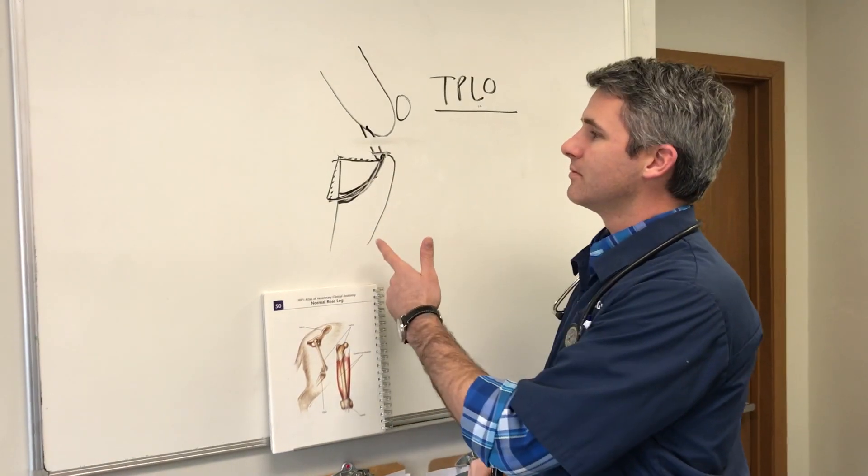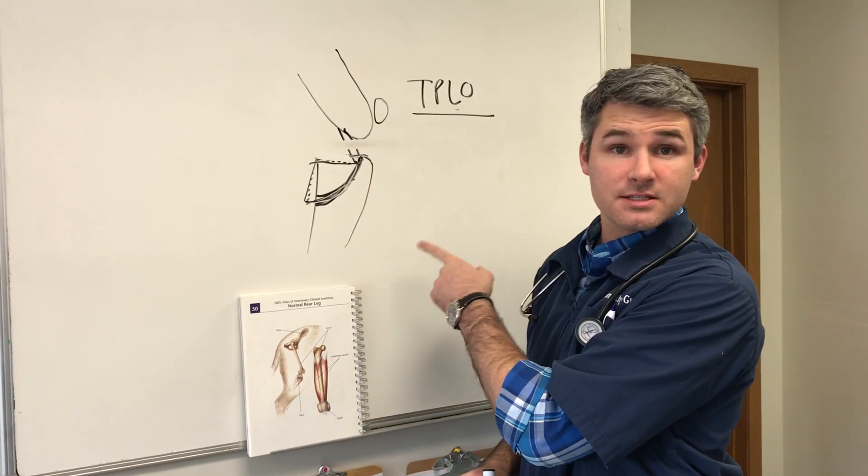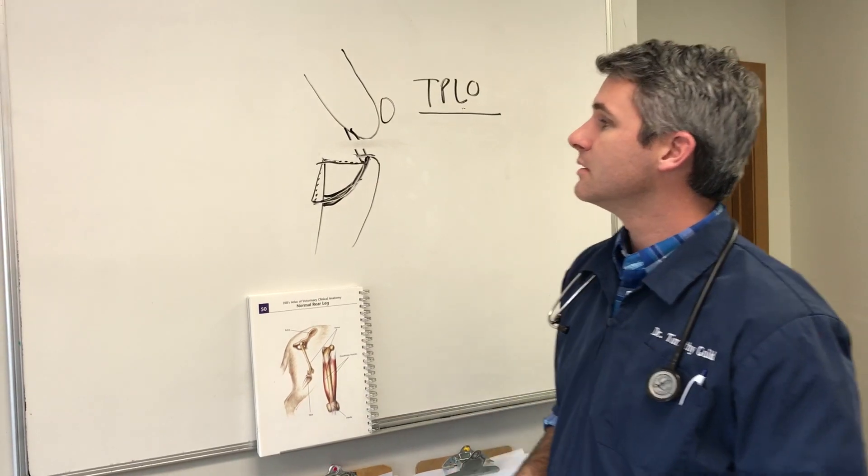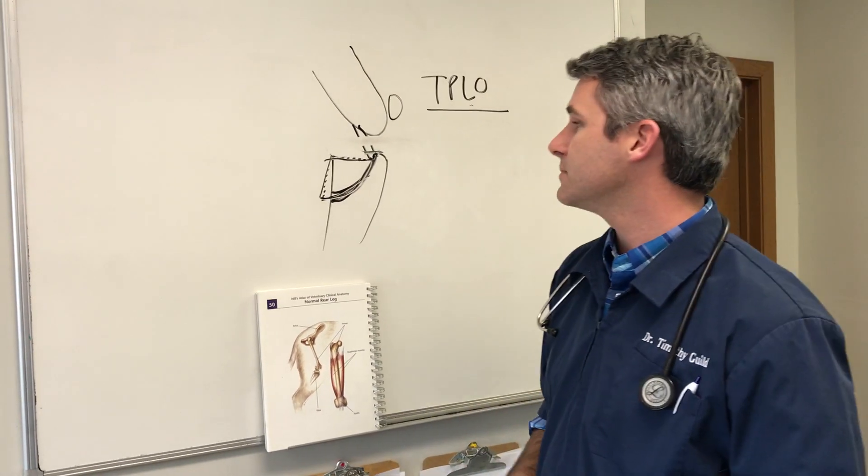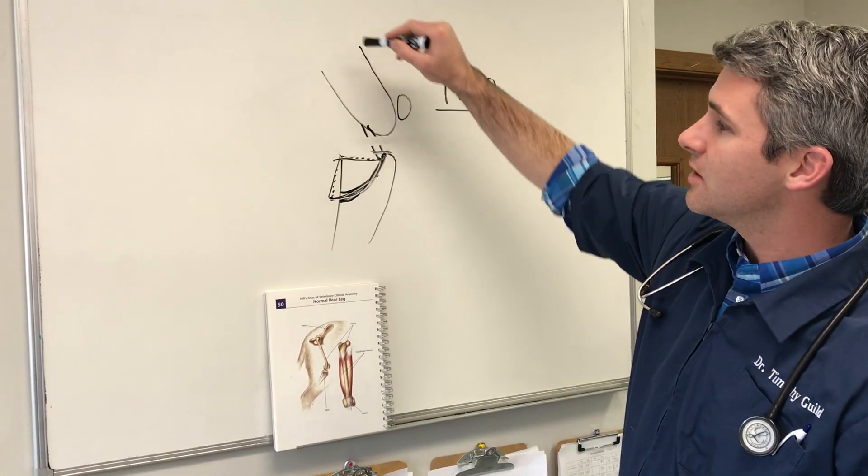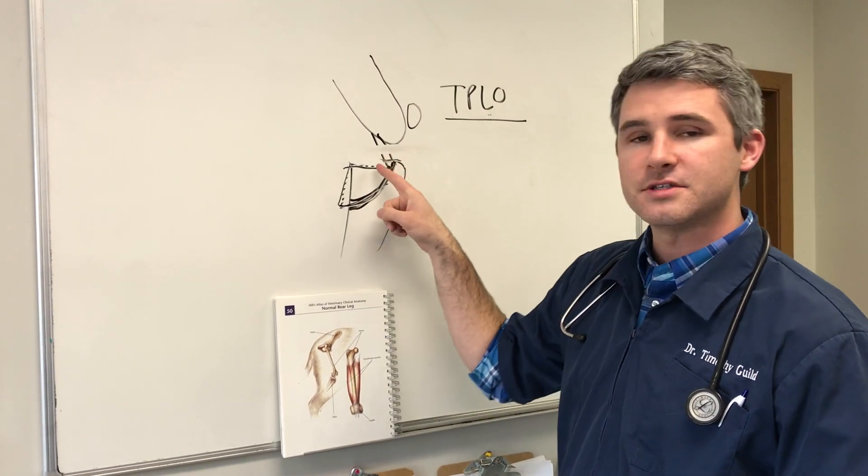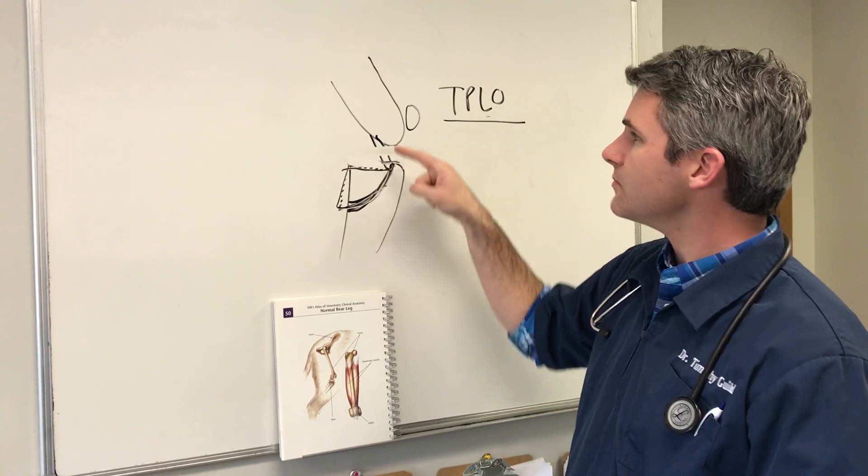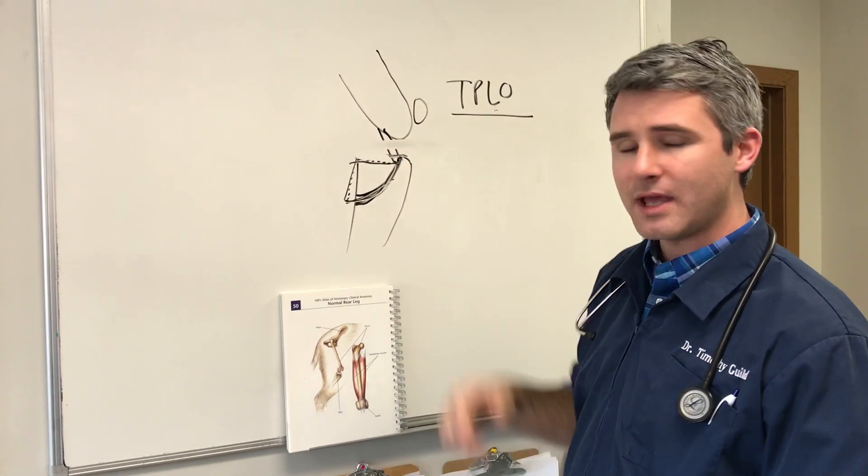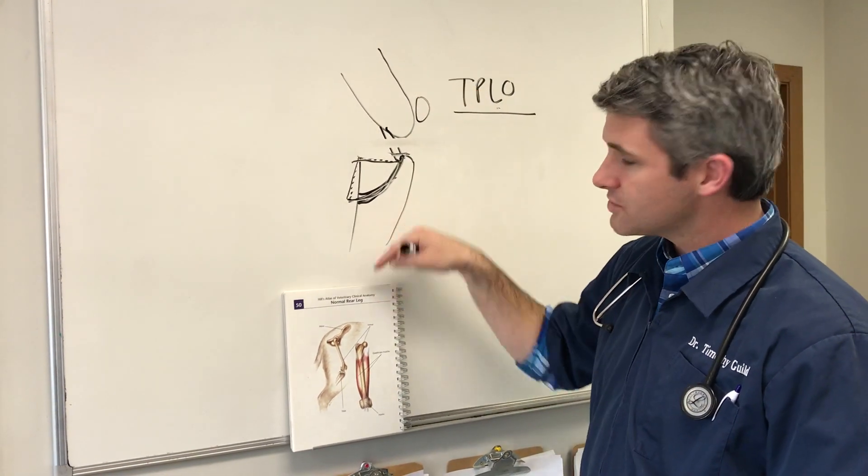Why does that help? Why does that fix a dog's ACL? Well, it's biomechanics. But the physics of it are, as a dog bears weight down its leg, it no longer needs its ACL. It will bear weight down at this new angle and put weight straight down its tibia.